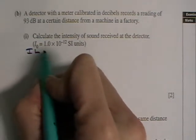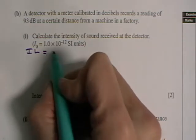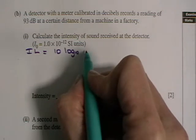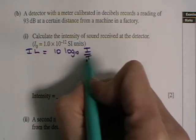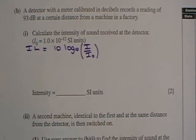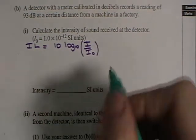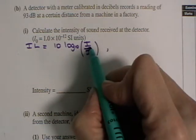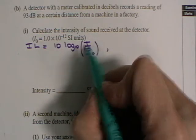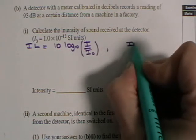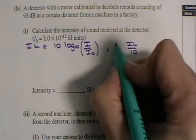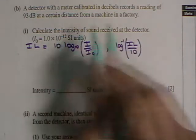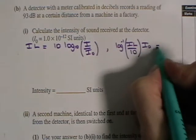The equation, and you'll find this in your data sheet, intensity level is 10 times log to the base 10, I over I not. In fact, I'm not just sure that you will find this in your data sheet. It depends if it's still there after the specification has changed. So if you rearrange that, we need to get a value for I. So it's intensity level divided by 10, log to the minus 1 of that, and then you have to multiply it by I not. And that will give you I.